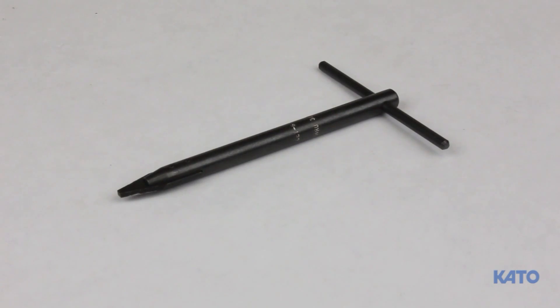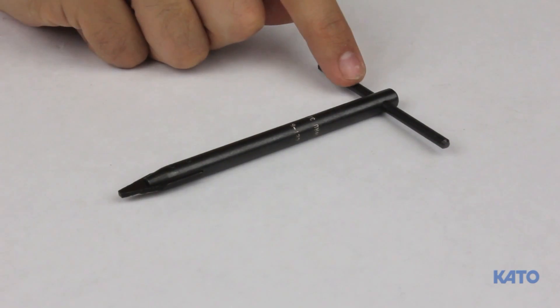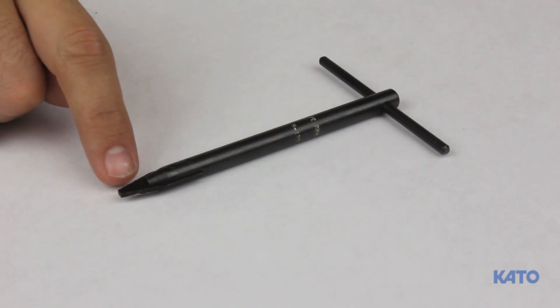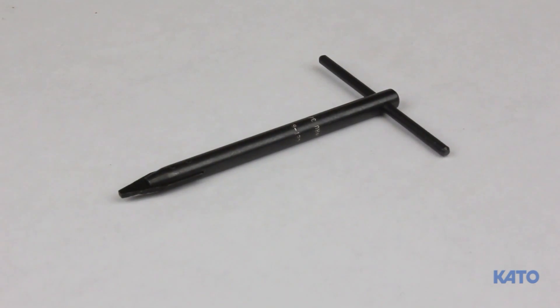This is the Tanged Extraction Tool. At this end we have the handle, and at the front, the blade. Please be careful when handling the blade, it can be sharp.